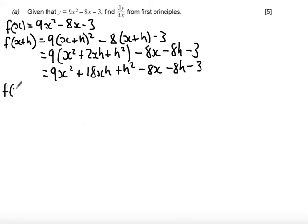Now, calculate f of x plus h and take away f of x. You'll notice all the terms without h cancel out: 9x squared and 9x squared, minus 8x and minus 8x, and minus 3 and minus 3. So it leaves me with 18xh plus h squared minus 8h.